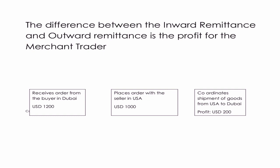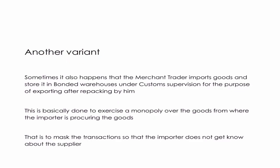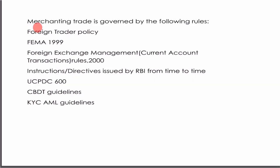There is also another variant in merchant trade transactions, where the merchant trader imports goods and they actually come to India, but do not leave the customs warehouses. The goods are kept in a bonded warehouse under customs supervision, where they are repacked by the merchant trader. This is basically done to exercise a monopoly over the goods and to mask the transaction — so that the importer does not get to know the supplier, meaning the buyer will not know from where the merchant trader has sourced the goods. This happens but is rare.